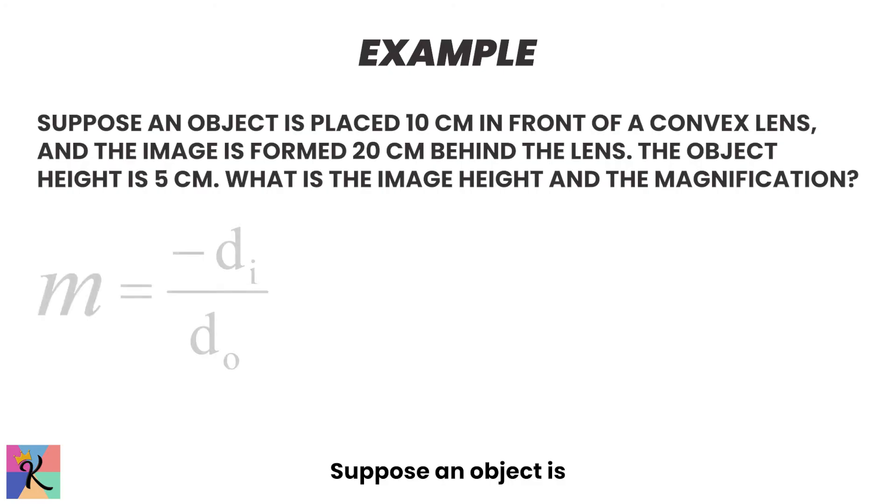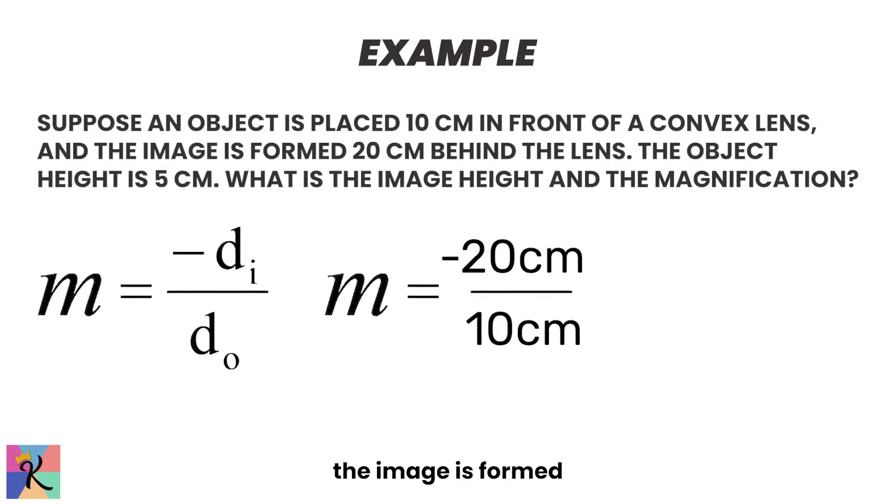Let's apply the magnification equation to an example. Suppose an object is placed 10 centimeters in front of a convex lens, and the image is formed 20 centimeters behind the lens. The object height is 5 centimeters. What is the image height and the magnification? So, the magnification is negative 2, indicating the image is twice the size of the object and inverted.